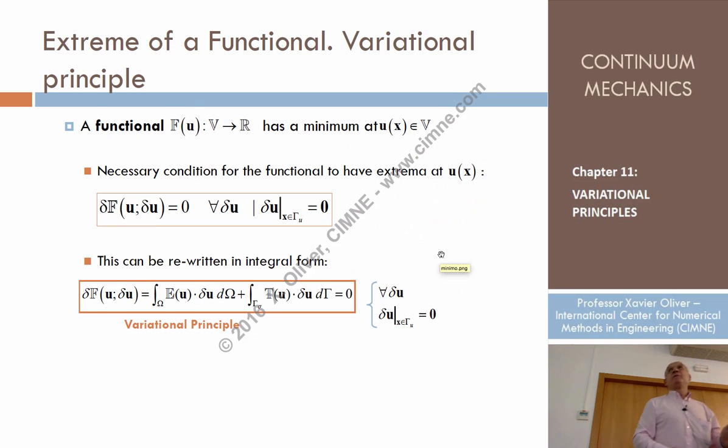Well, the condition is that if we want to find a maximum or an extreme, or maximum or minimum of a principle, what you have to do is just impose that the Gato derivative of the functional for any direction compatible—I mean, just imposing that these directions, these perturbation directions delta u—are equal to zero.